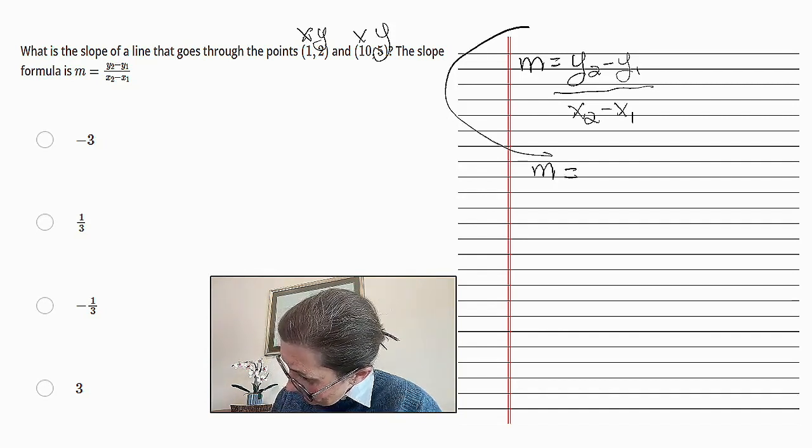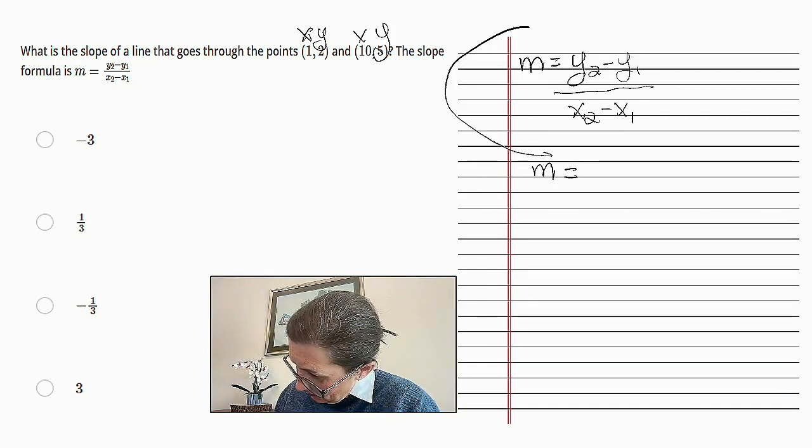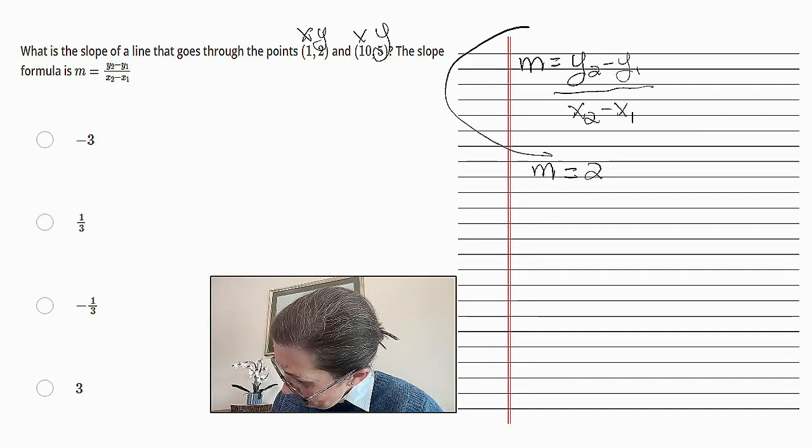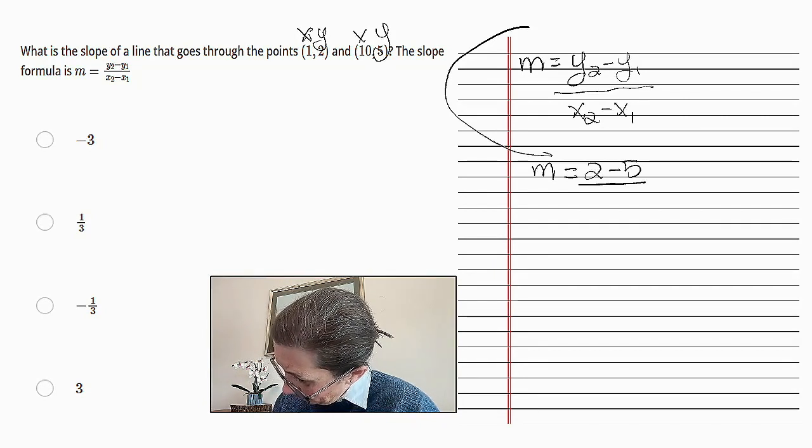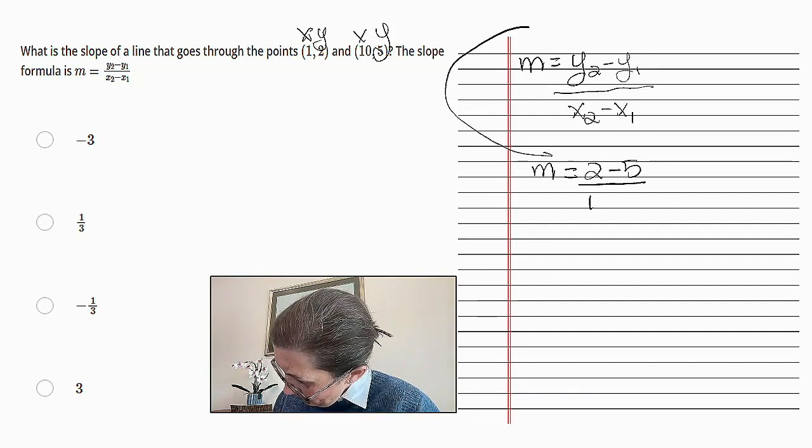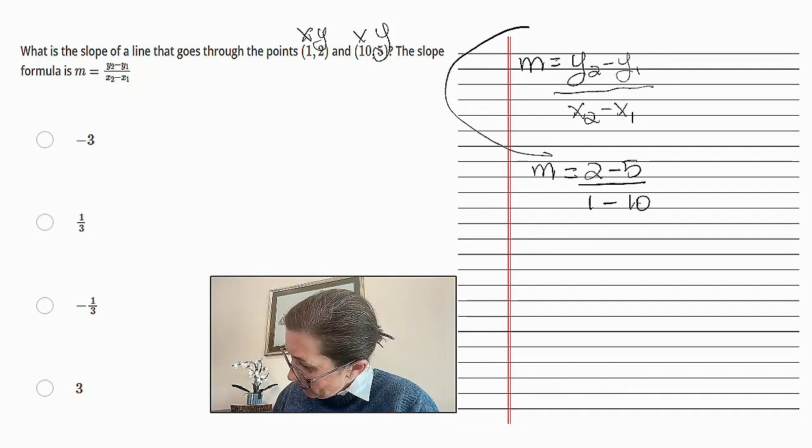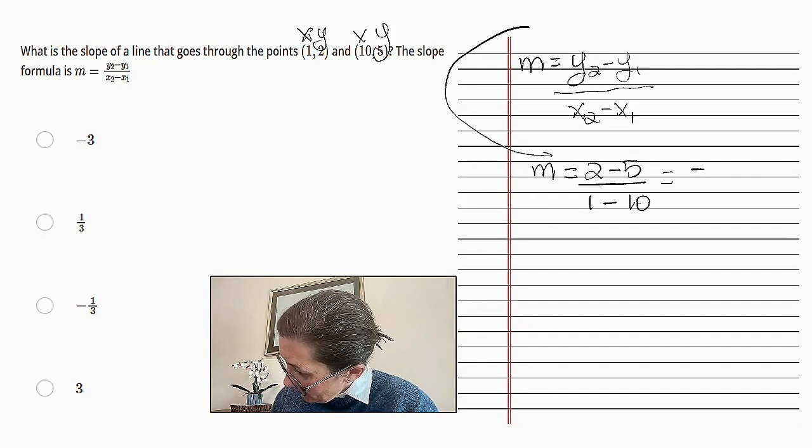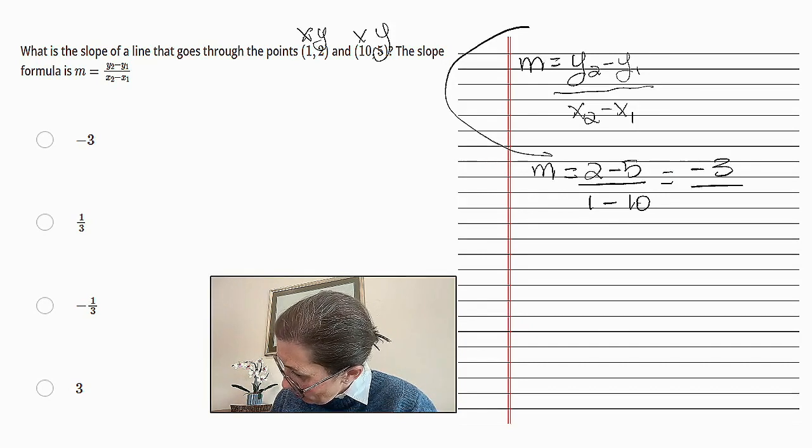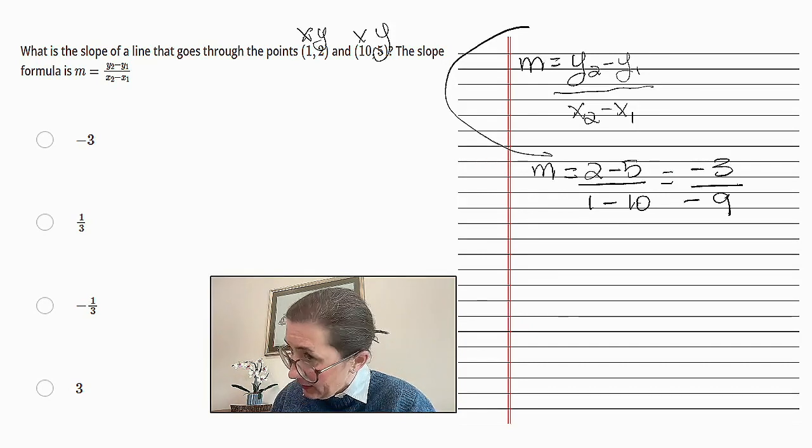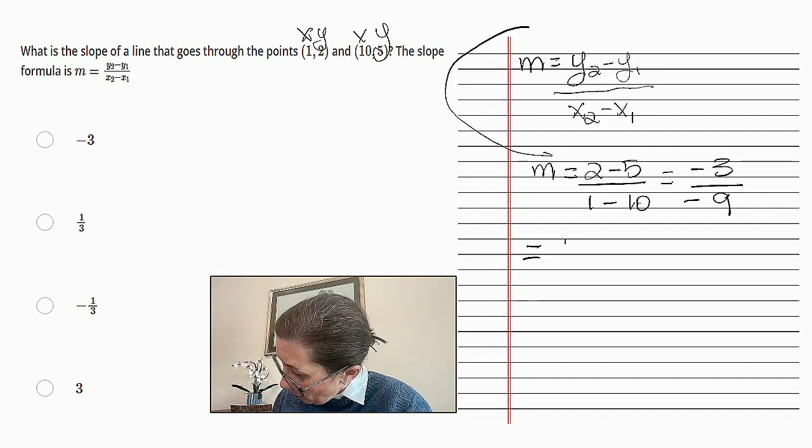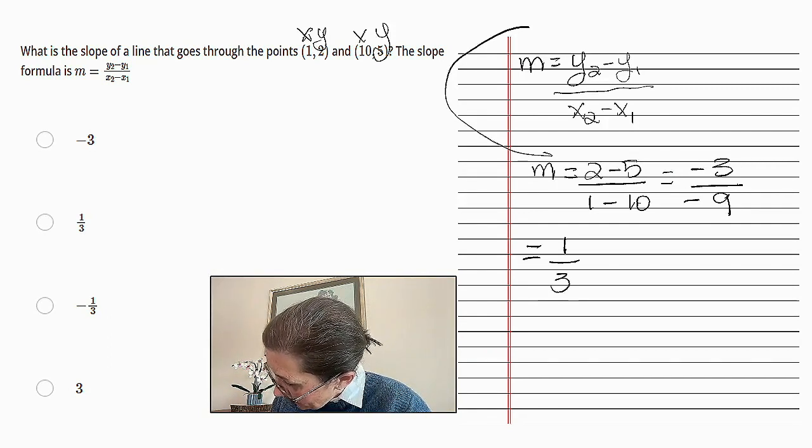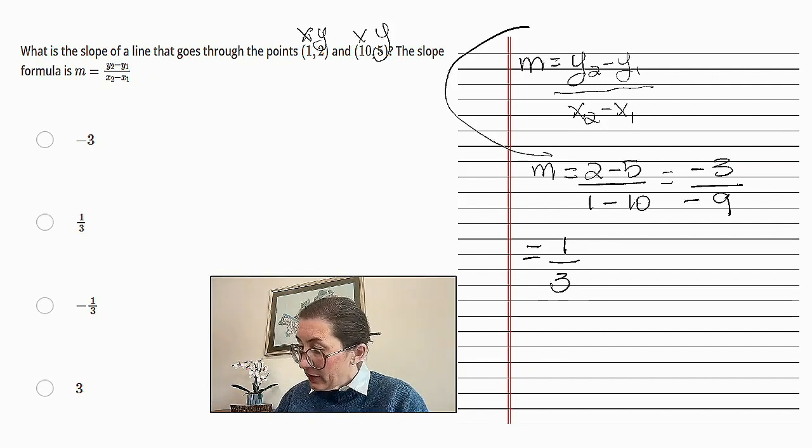m equals 2 minus 5 over 1 minus 10. So we end up with -3 over -9. And that is equal to 1 over 3. Because -3 divided by -9 is one-third.